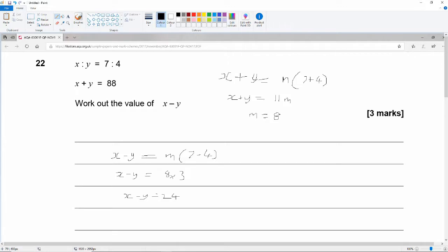And if you did want to know the values for x and y, you would just say 7 times 8 is 56, and 4 times 8 is 32.